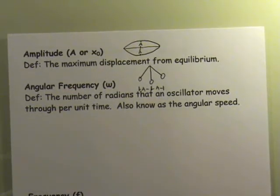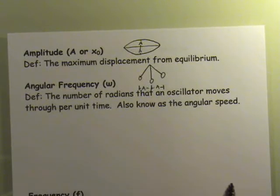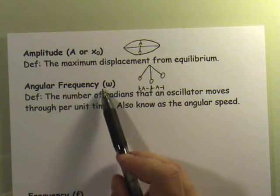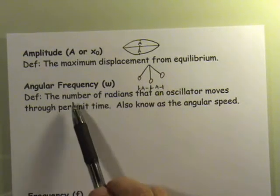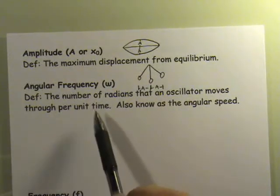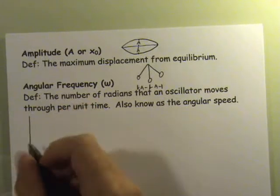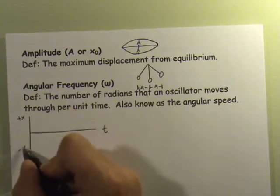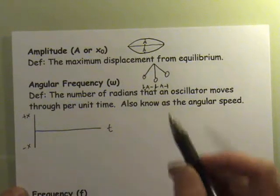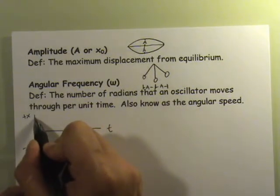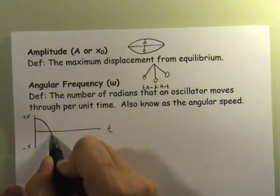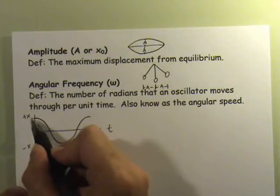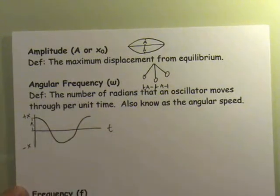A second really important property relates to the period of time it takes for the object to move through its cycle: the angular frequency. This is sometimes also called the angular speed or angular velocity, and it is simply the number of radians that an oscillator moves through per unit time. Let's draw a displacement-time graph. Typically, most oscillators are started at their extreme position — that would be the amplitude, A.